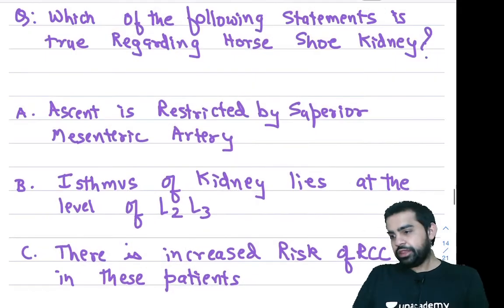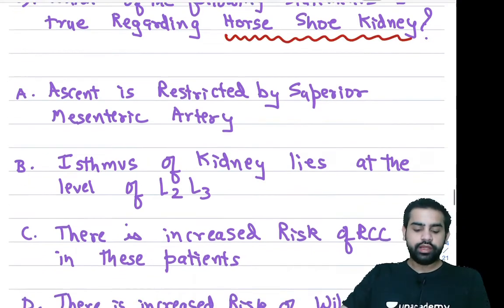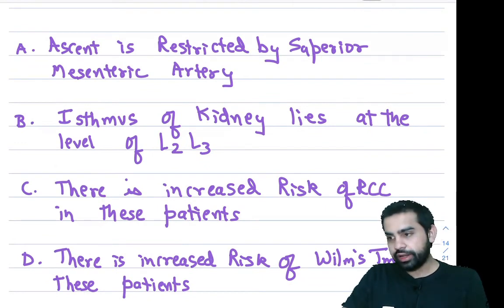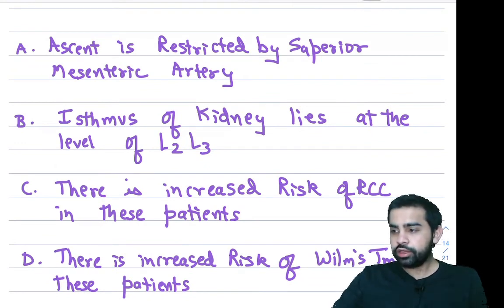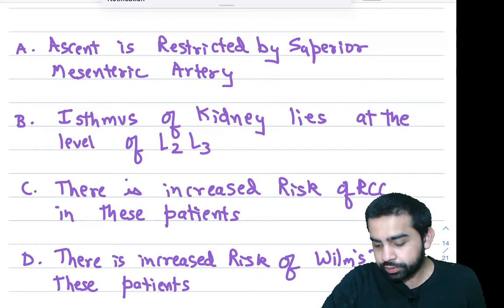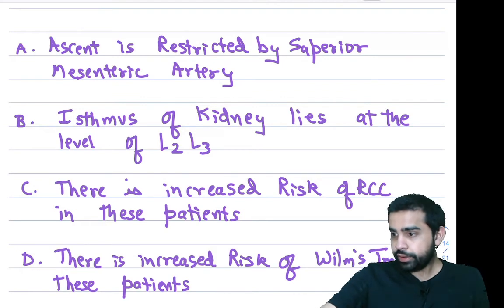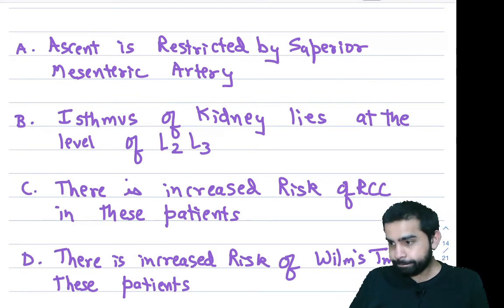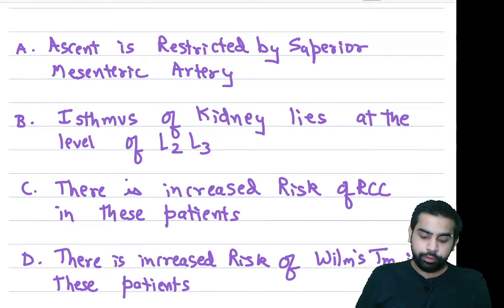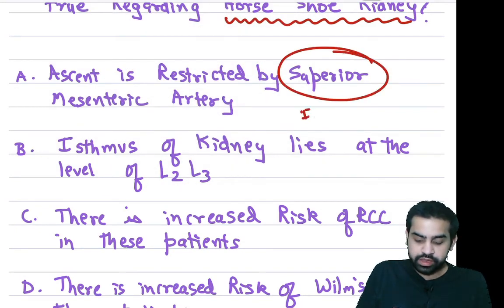Next question: which statement is true regarding horseshoe kidney? Option A: ascent is restricted by the superior mesenteric artery — false. The ascent of the horseshoe kidney is restricted by the inferior mesenteric artery, not the superior. Option B: the isthmus lies at L2-L3 — also false. The isthmus of the horseshoe kidney lies at the level of L3-L4.